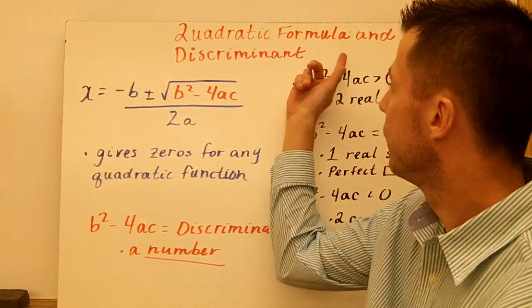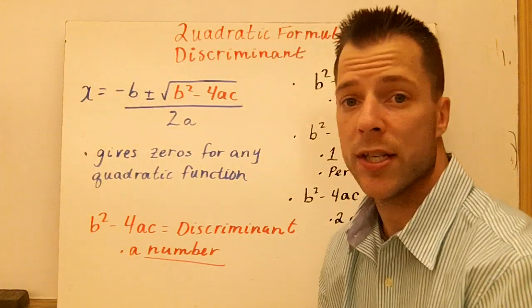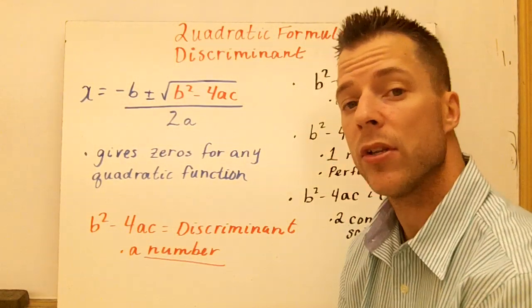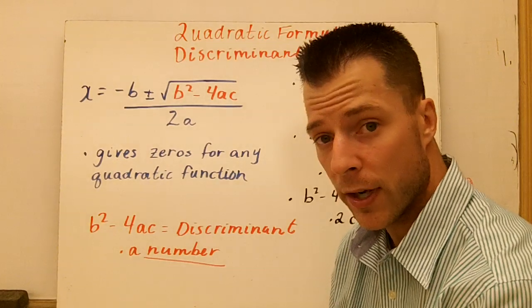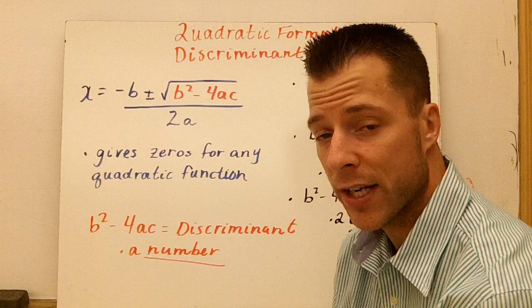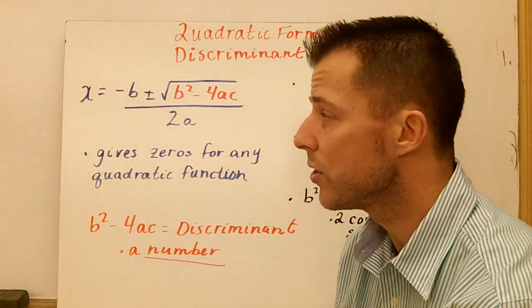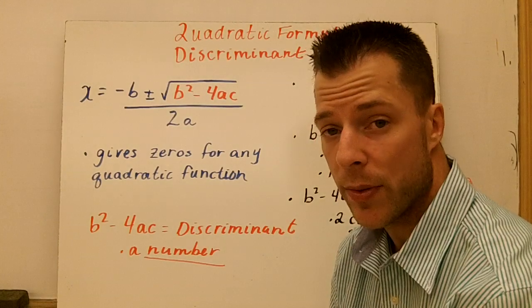All right guys, welcome to Quadratic Formula and Discriminant. What we're going to talk about today is solving quadratics using this thing called the Quadratic Formula, which you should know or have seen before. It can be used for any quadratic function. Instead of factoring or completing the square or using the square root property, if you just use the Quadratic Formula, you'll always be able to get the zeros.